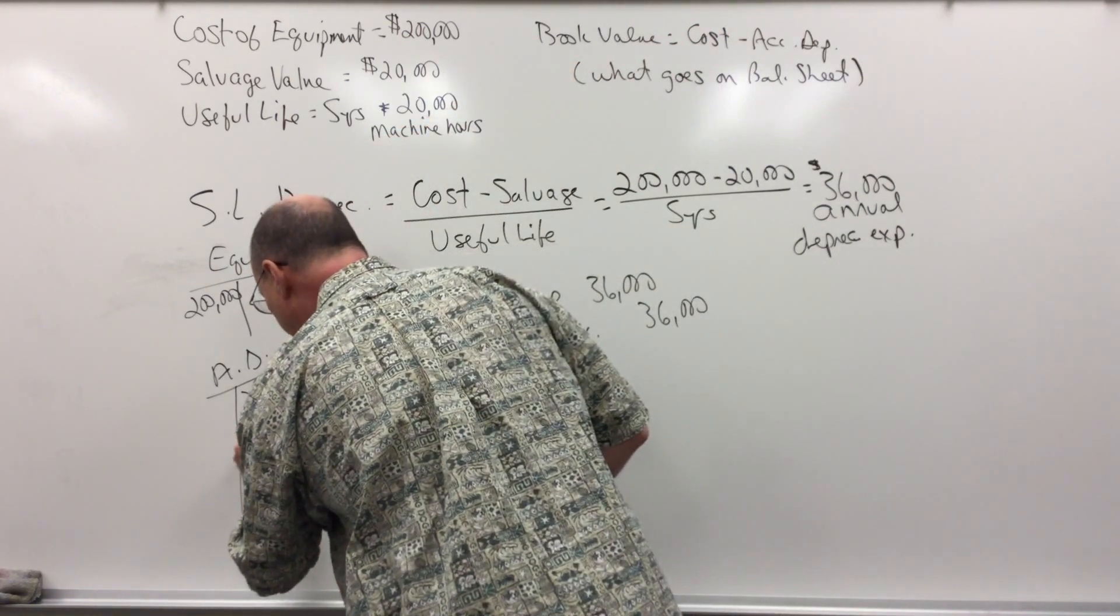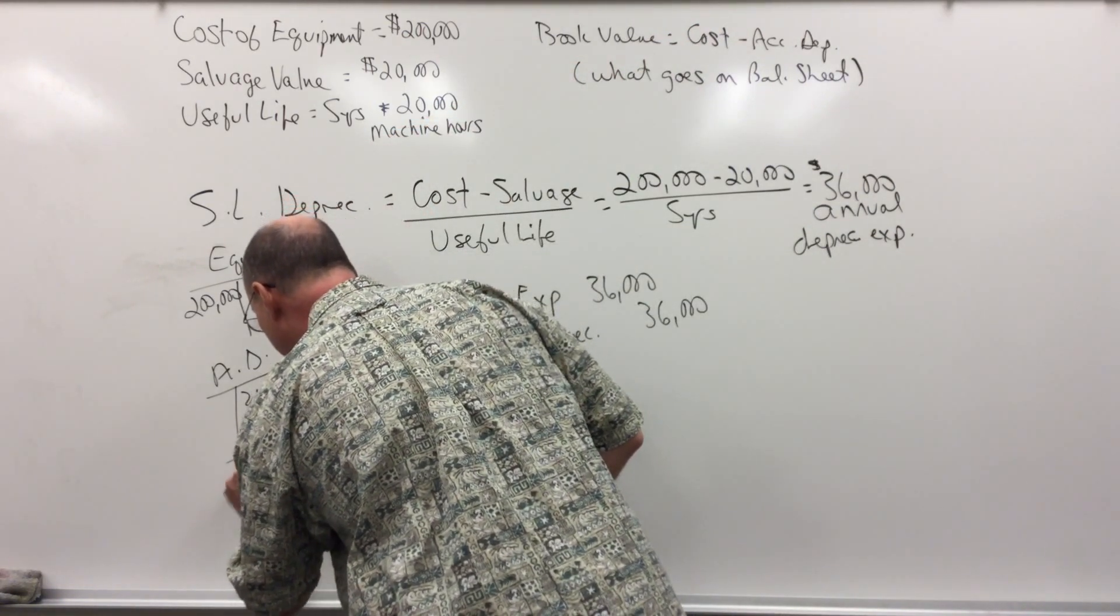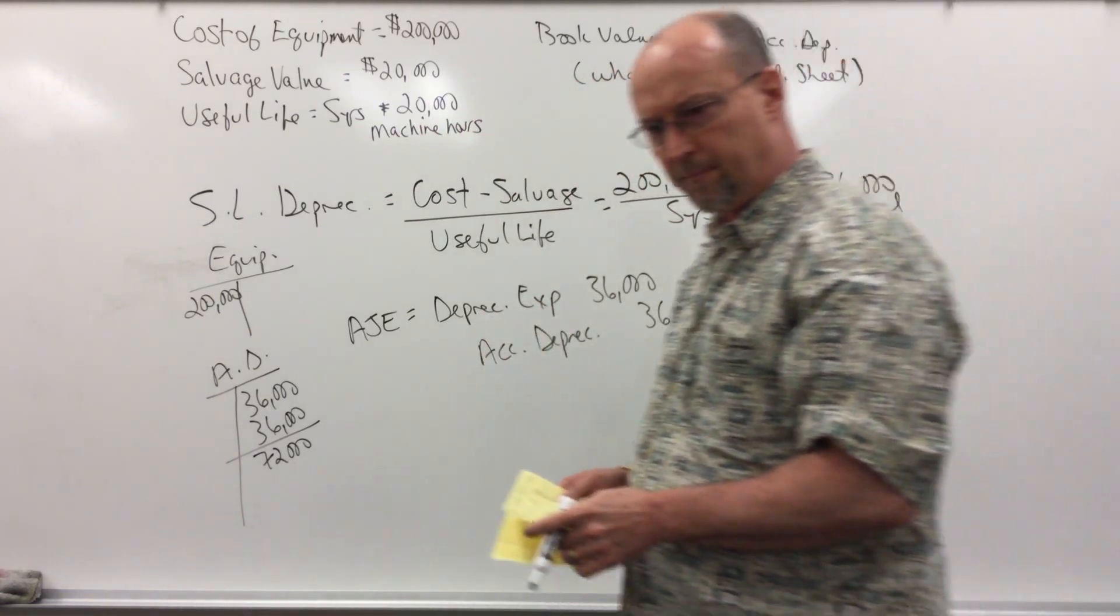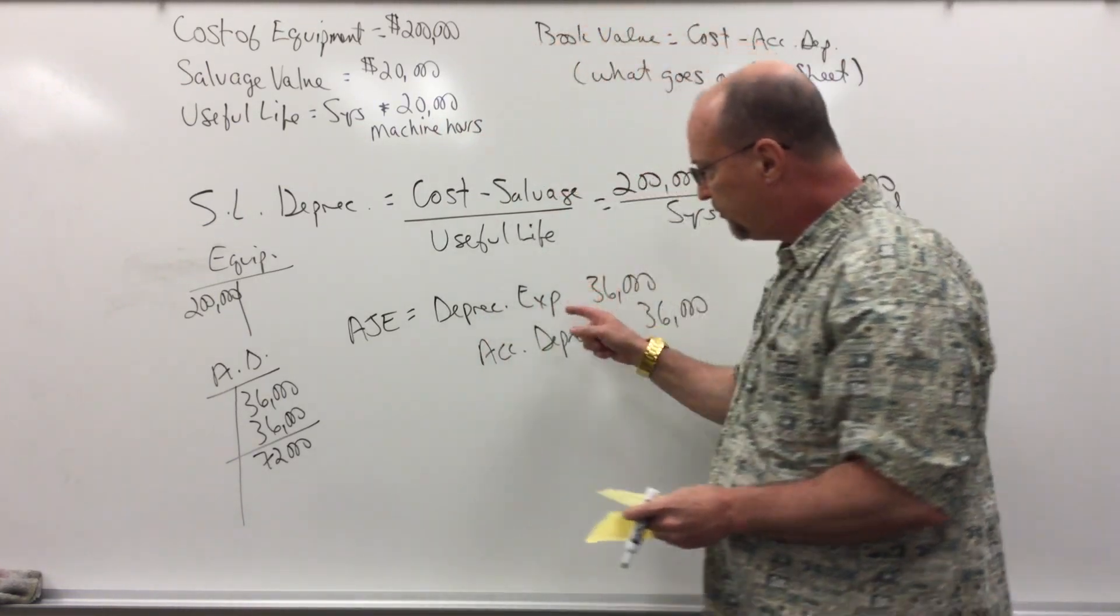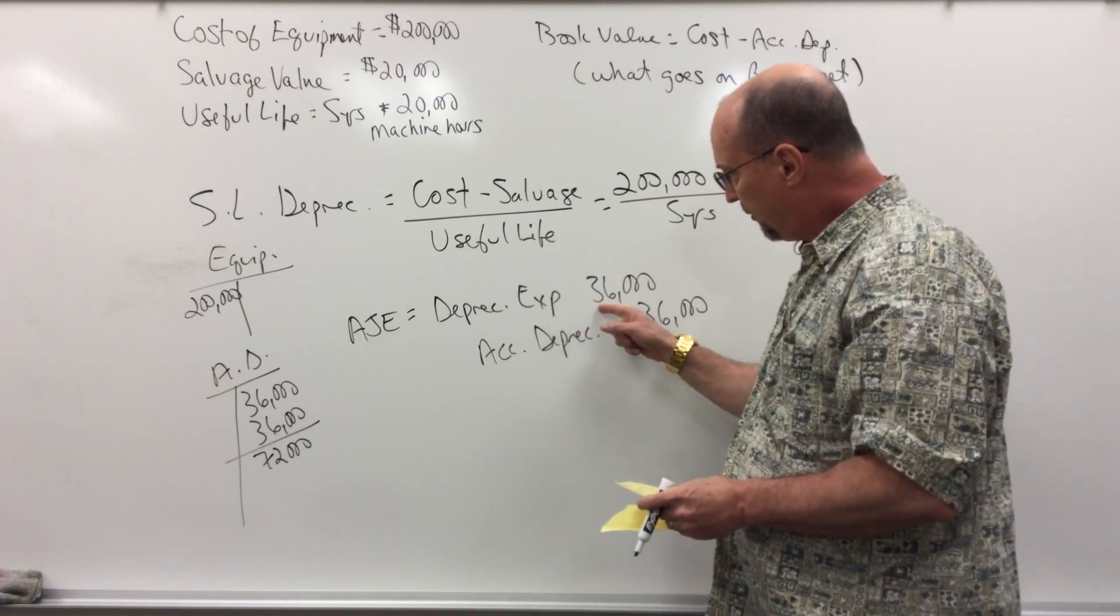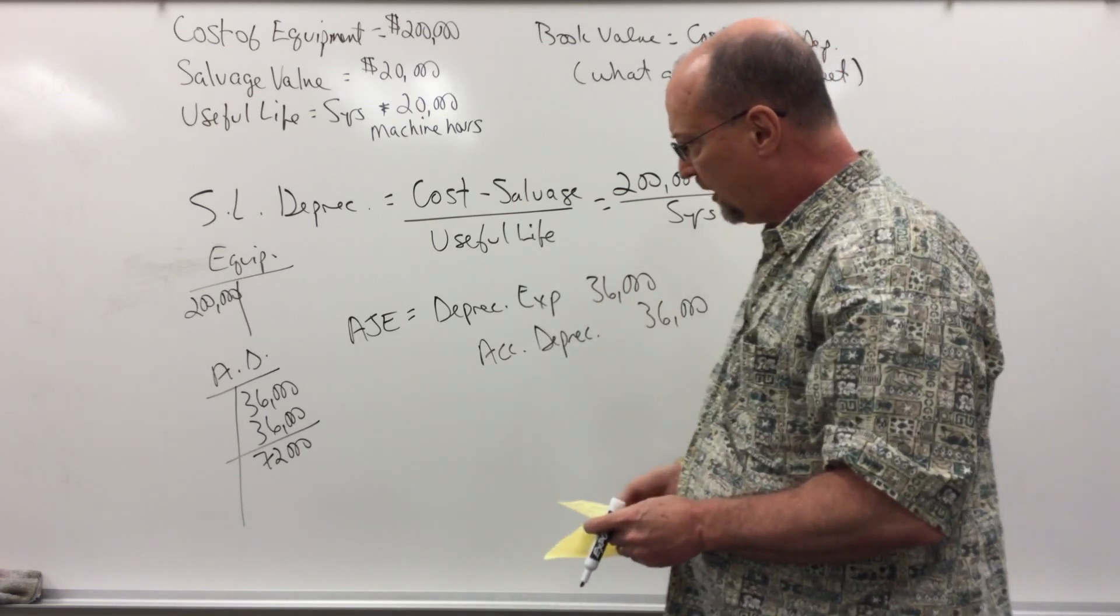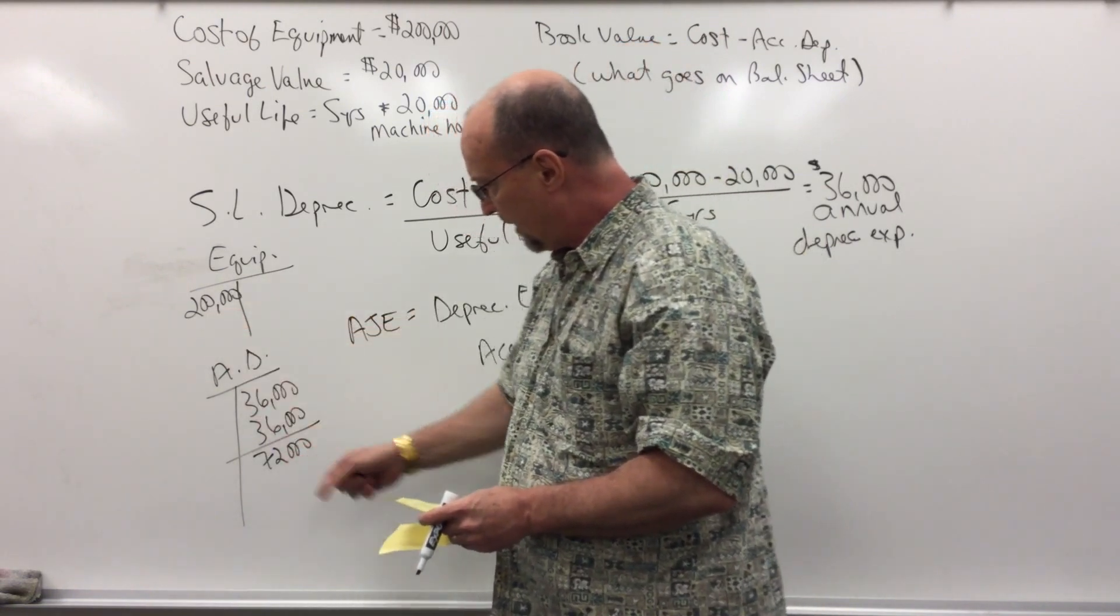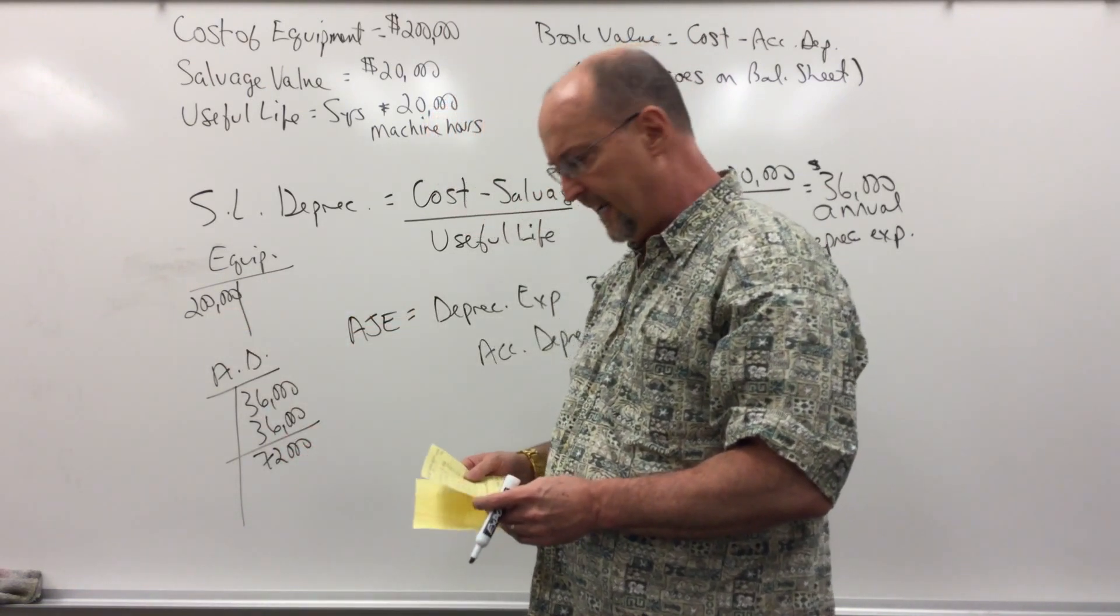One year later, I record the second year's depreciation, and now on the income statement, again, each year, $36,000 in depreciation expense. The book value on the balance sheet will be $200,000 minus $72,000, which would be $128,000.